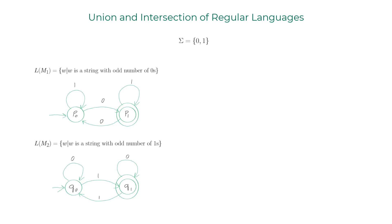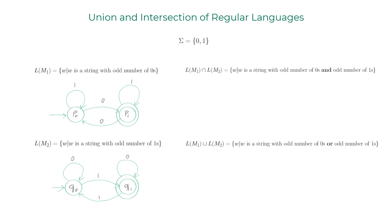Now let us consider the intersection and union of these two languages. Formally, L(m1) ∩ L(m2) is the set of all strings with an odd number of zeros and an odd number of ones. Similarly, L(m1) ∪ L(m2) is the set of all strings with an odd number of zeros or an odd number of ones. If we can construct DFAs recognizing these two languages, we are a step closer to formally proving that regular languages are closed under union and intersection — meaning if L1 and L2 are regular, then L1 ∪ L2 and L1 ∩ L2 are regular as well.